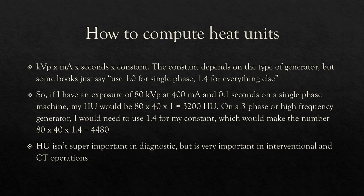If I swap that out to a three-phase generator or high frequency, I use the constant of 1.4. So 80 KVP times 40 MAS times 1.4 gives me 4,480 heat units. With more efficient equipment you do generate more heat at the anode, but that's okay because the anodes are designed to handle that additional heat, and it's really good for the patient because your x-ray output is much more consistent and your images are better.